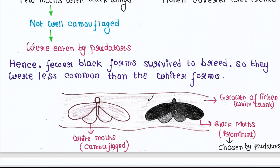It was very easy for the predator birds to pick them up. This means that fewer black forms survived to breed, so they were less common than the white forms.